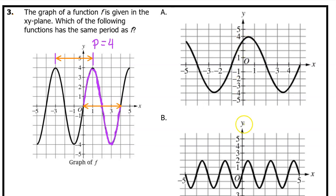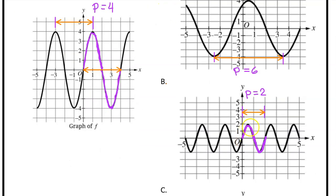So which one of these options also has a period of 4? Measuring from minimum to minimum, we see that option A has a period of 6, so A is out. Highlighting one cycle of function B, we see that the period is 2, so B is out.